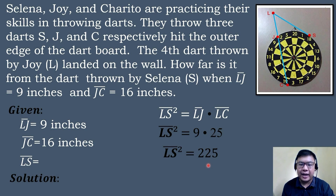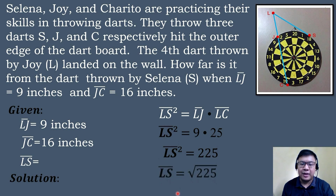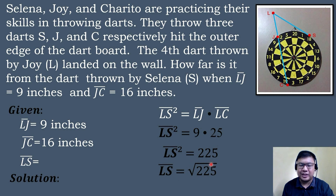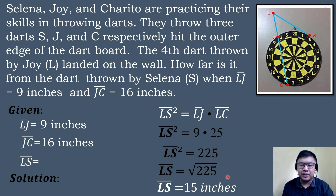Simplifying: segment LS squared equals 9 times 25, which is equal to 225. Then we apply the square root to both sides — the square cancels out — and segment LS equals the square root of 225, which equals 15 inches.